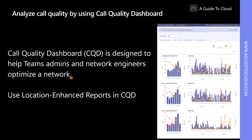Where Call Analytics is designed to help admins and help desk agents troubleshoot call quality problems with specific calls, the Call Quality Dashboard, or CQD, is designed to help Teams admins and network engineers optimize a network. CQD shifts focus from specific users and instead looks at aggregate information for an entire Teams organization.